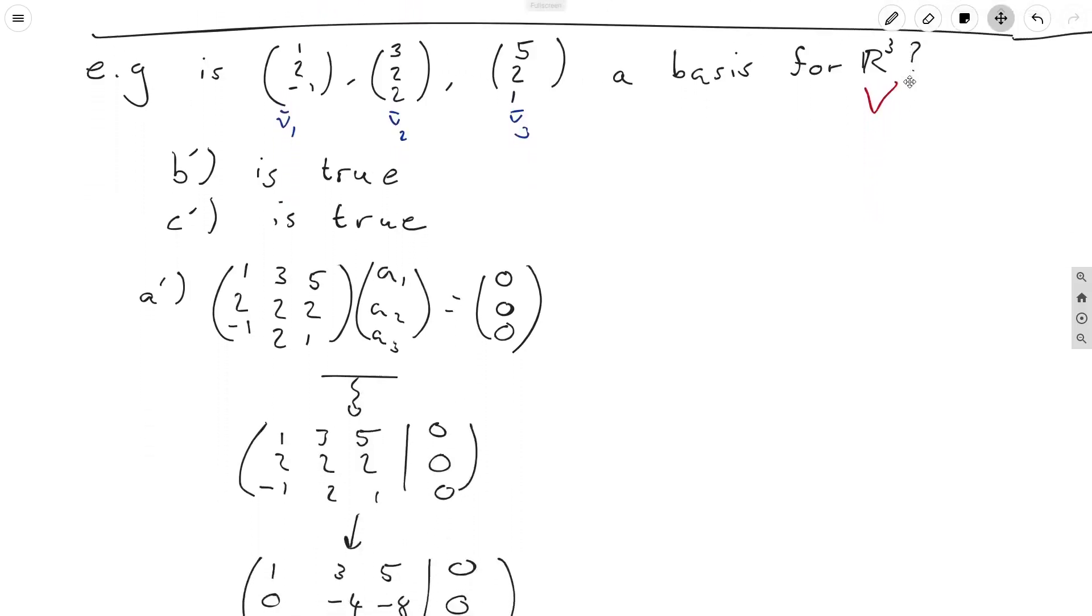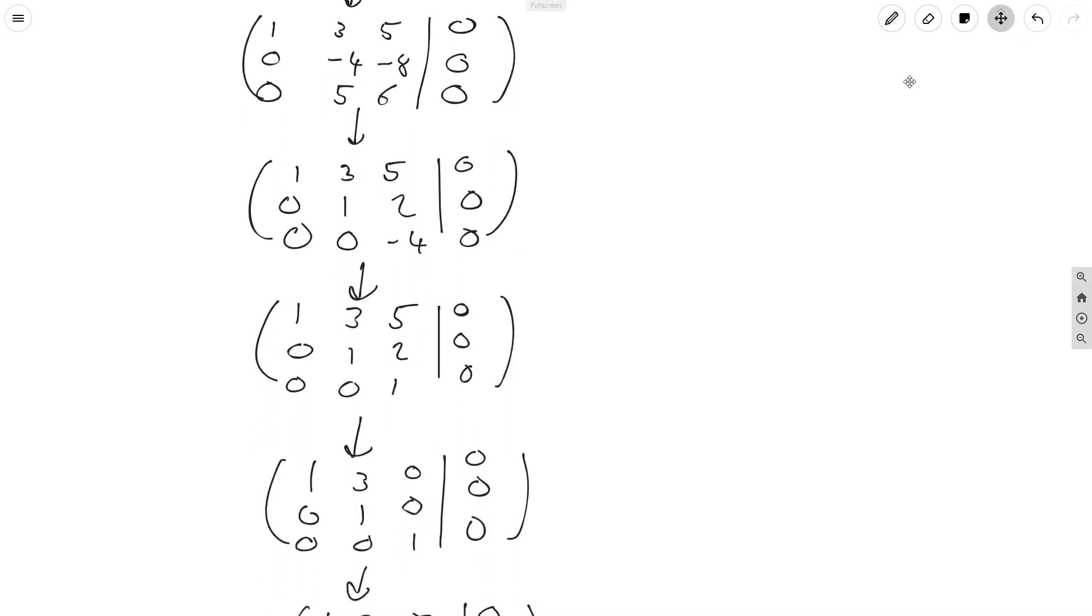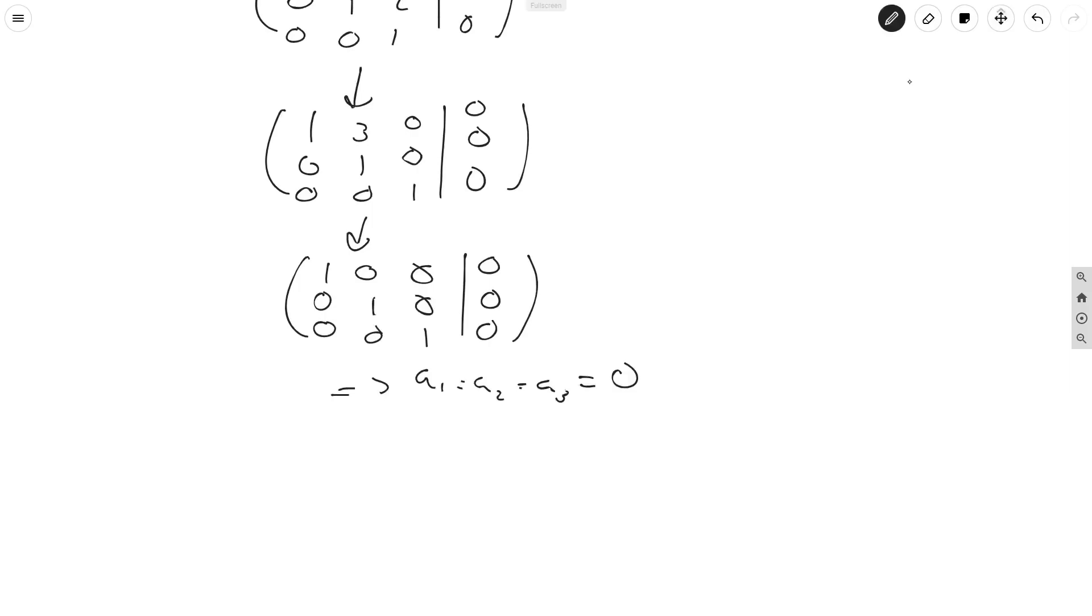Now, I've already gone through the augmented matrix equation. I'll just flash it here briefly, so you can go along with it if you want. But note that it does clearly imply that a1, a2, and a3 are equal to 0. So just to complete the argument, this implies v1, v2, and v3 are linearly independent, which implies the condition a prime is true, which implies v1, v2, and v3 is a basis.